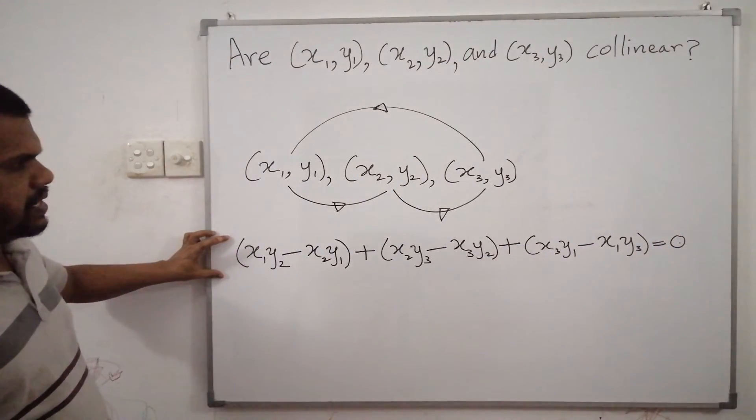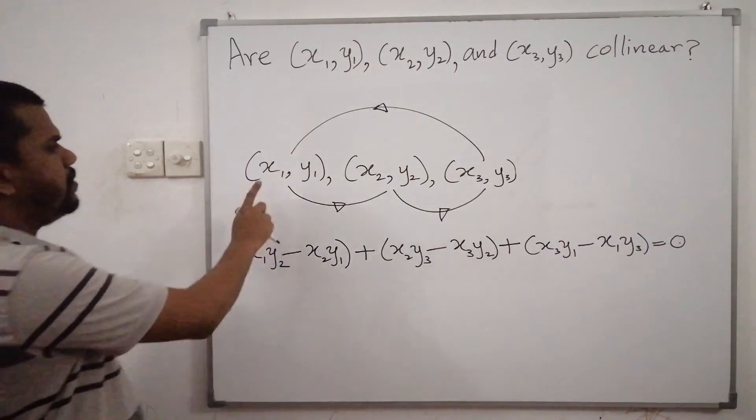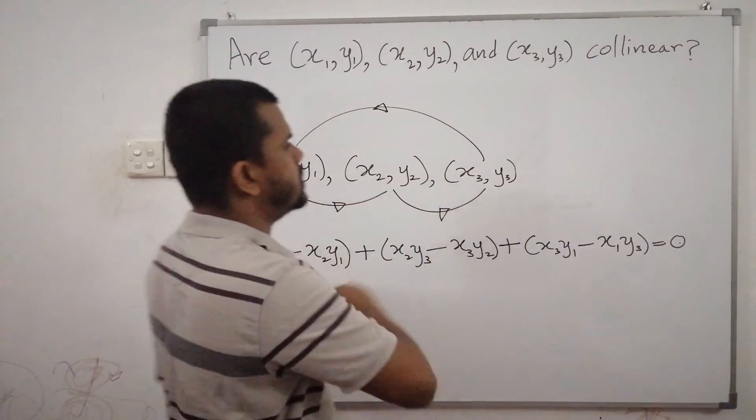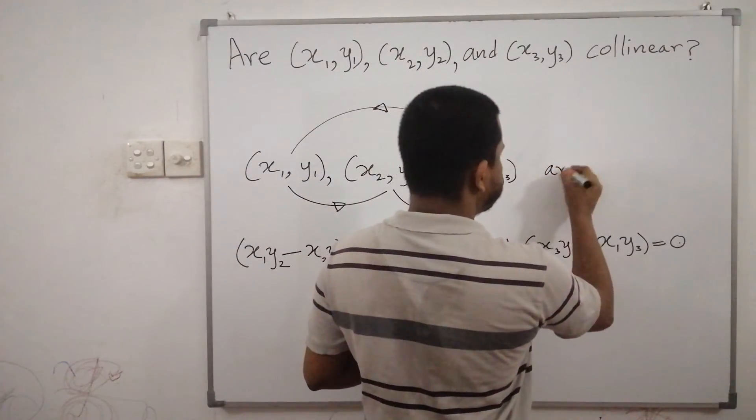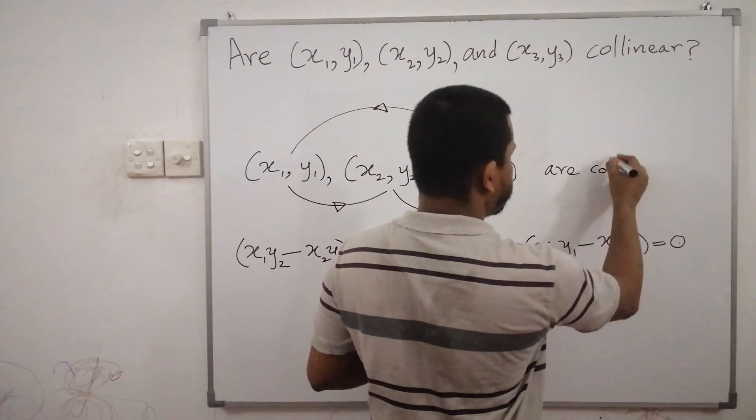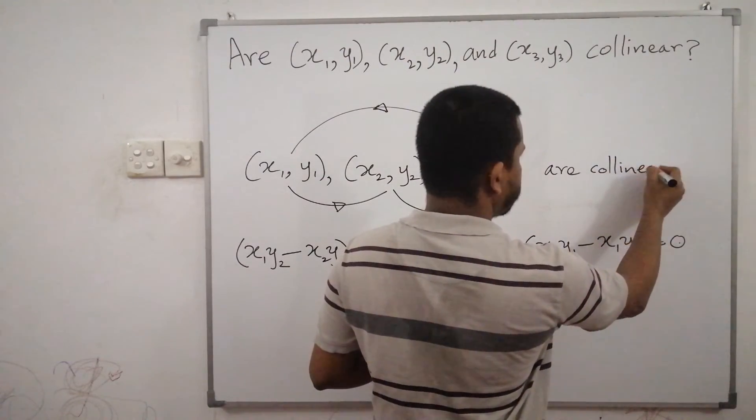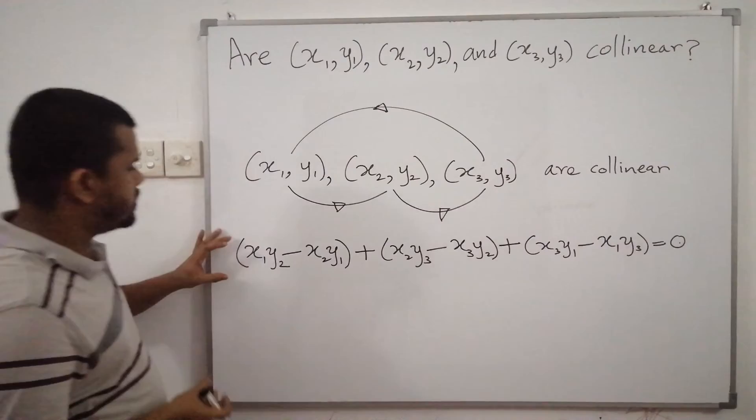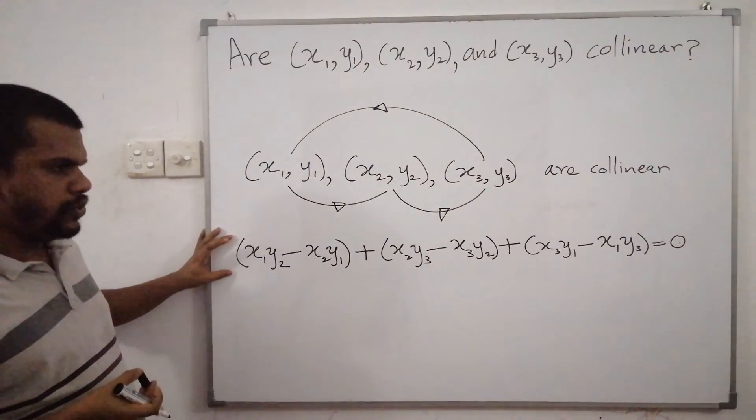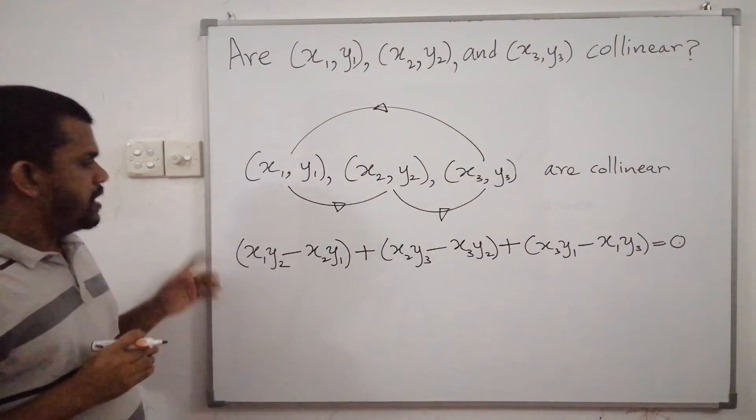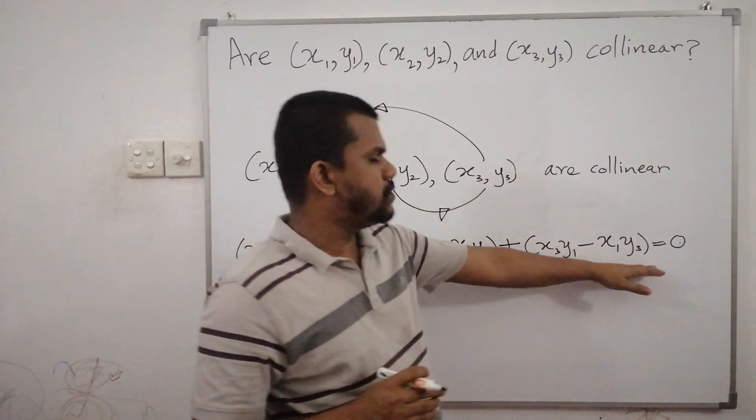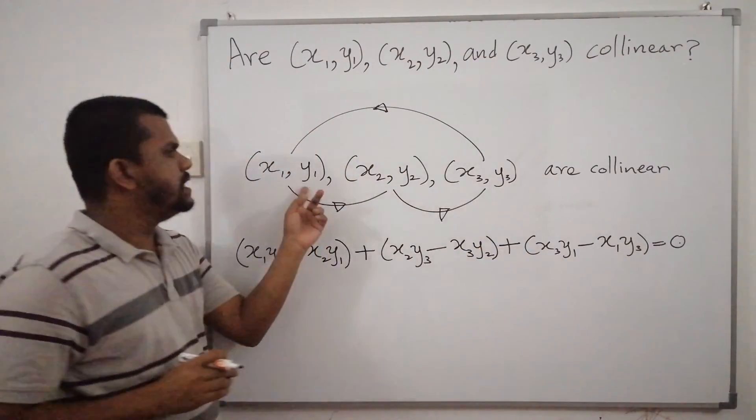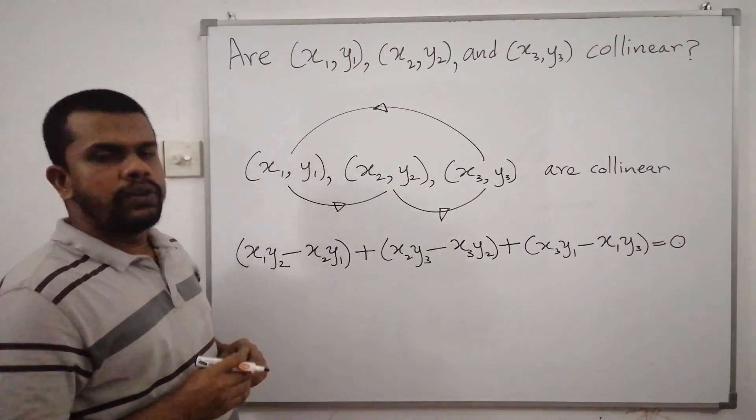Now, this is our expression. So if these three points are collinear, then this expression is true. Not only that, if this expression is true, definitely these three points are collinear.